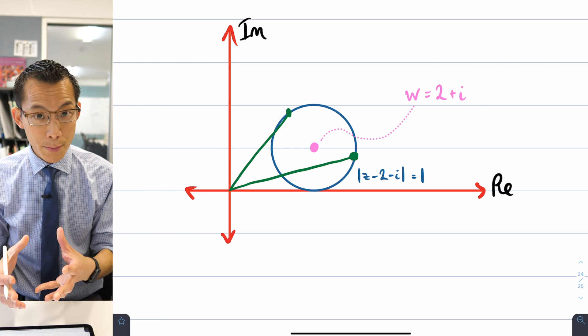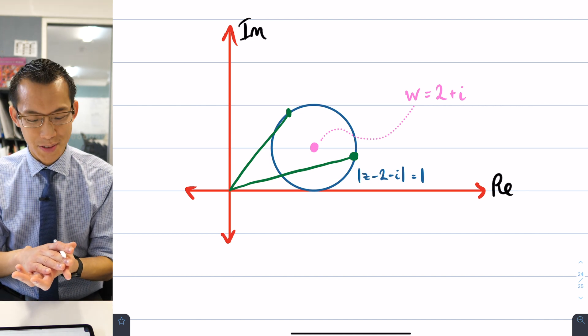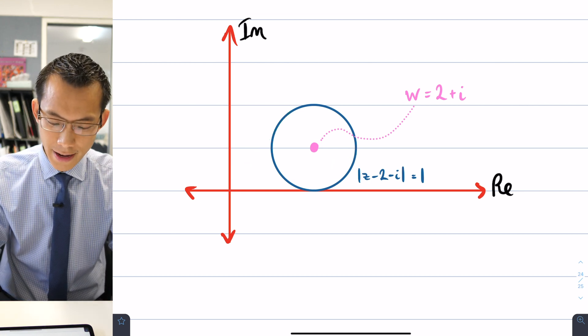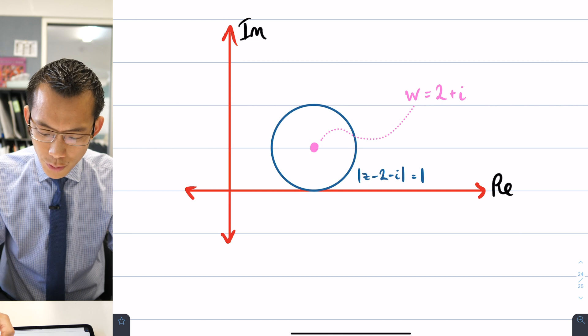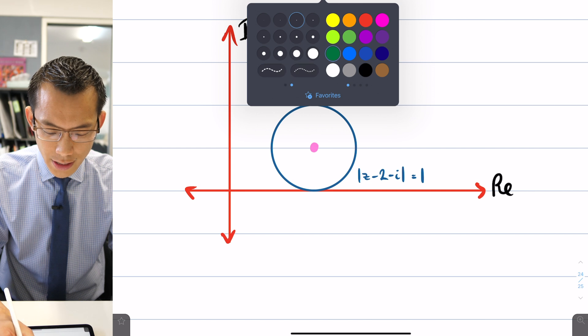So clearly the modulus of z is variable and there is a point which is the lowest value for modulus of z and there's a point where it's the highest. Now what you can hopefully see if I get rid of those ones there and maybe I'll move this sort of up here out of the way, what you can hopefully see